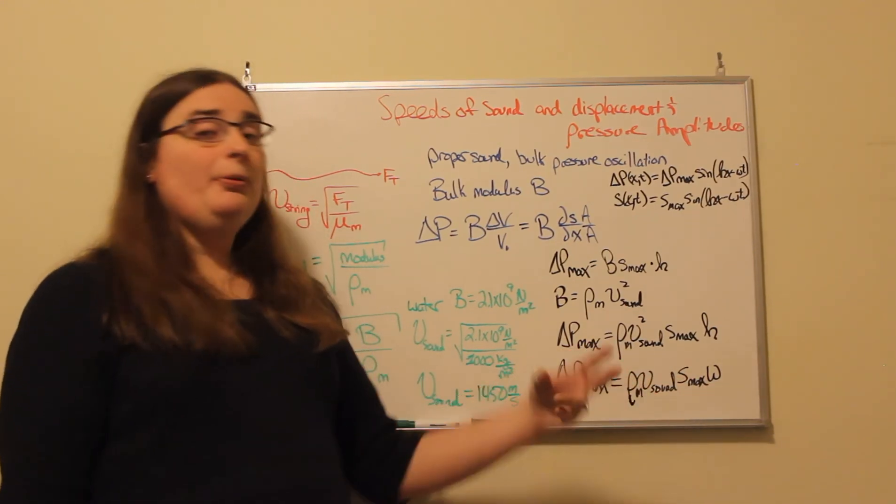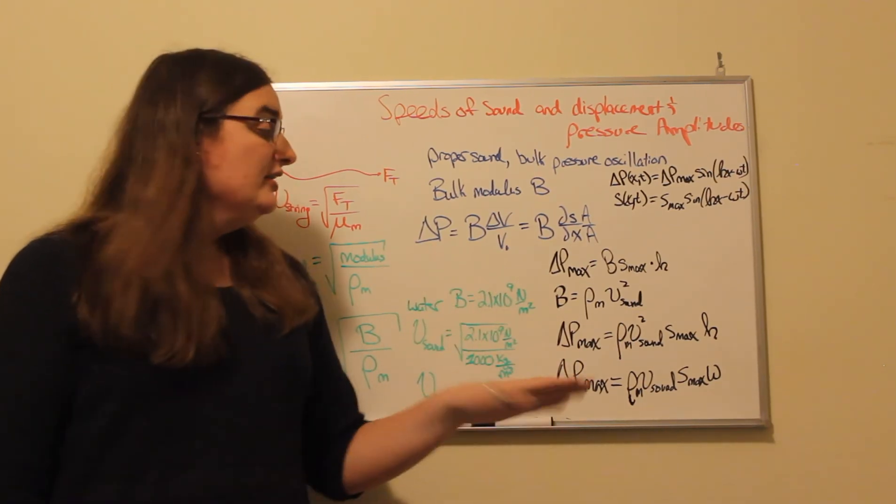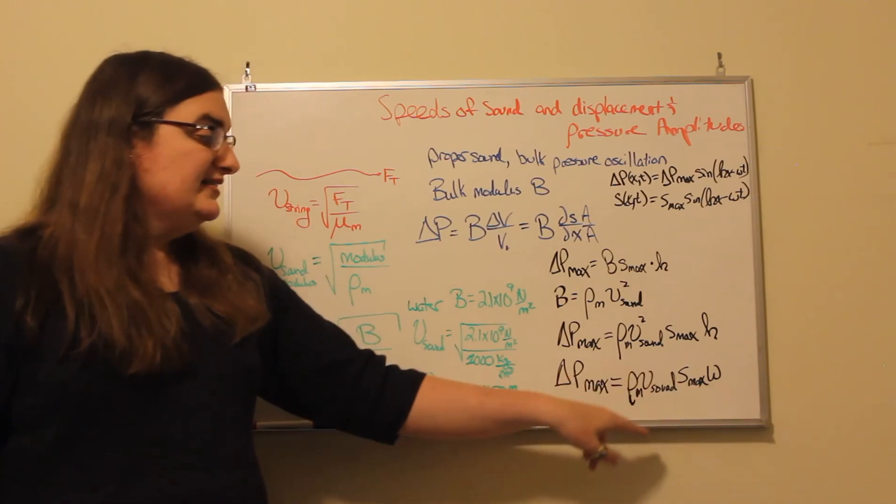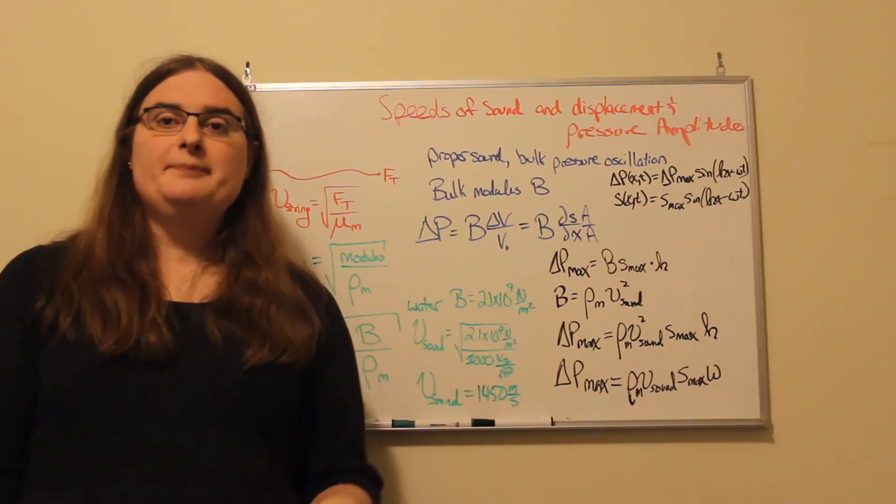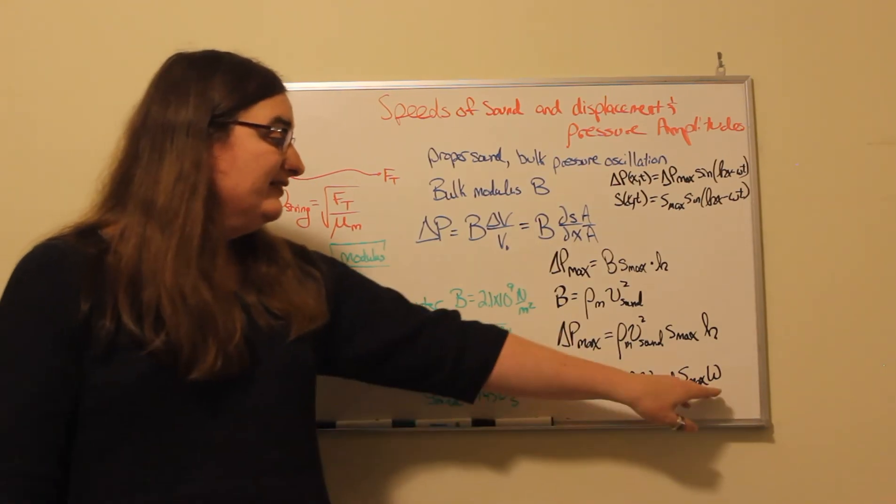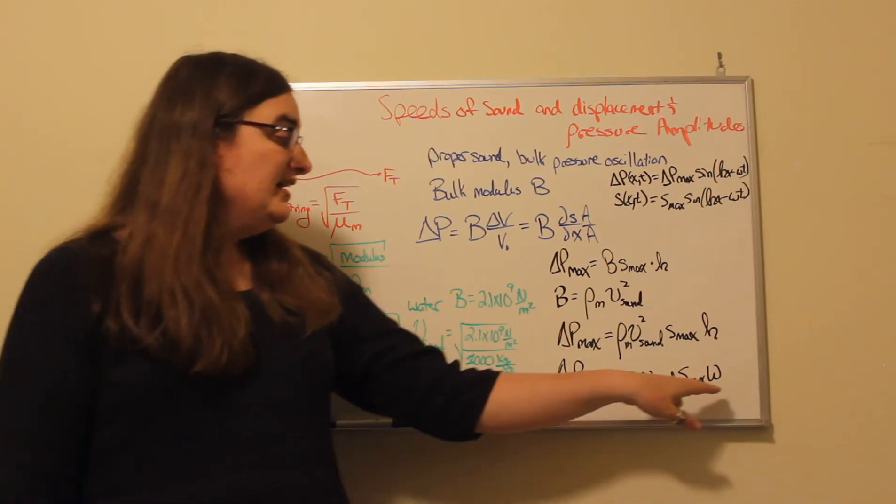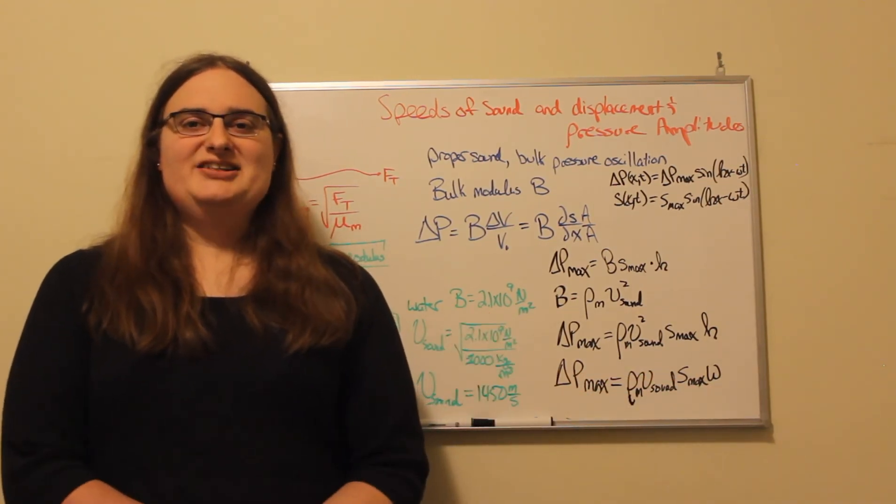And that's how pressure and the traveling velocity of the gas molecules, the derivative of position with respect to time would be linked to each other. Our maximum pressure amplitude is the density of the material times the speed of sound times our maximum displacement times the angular frequency omega.